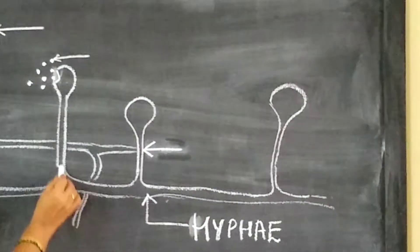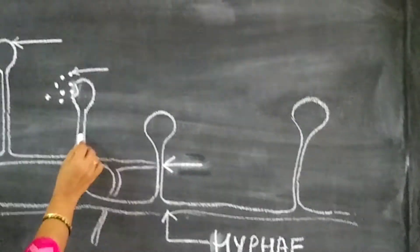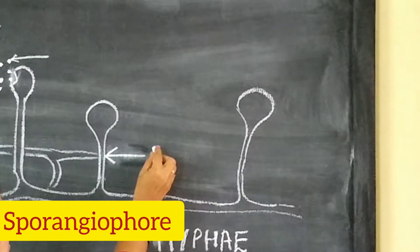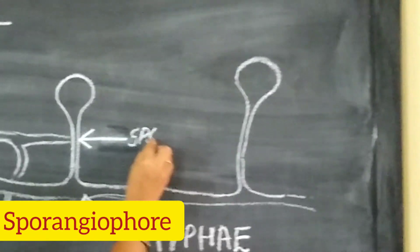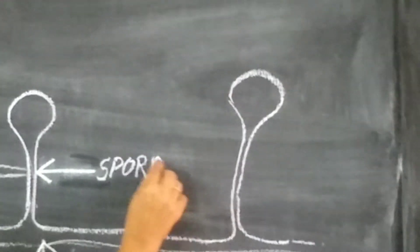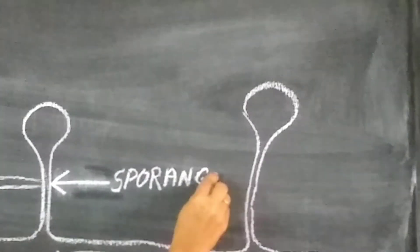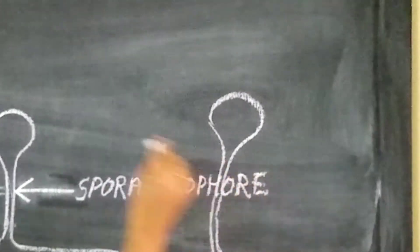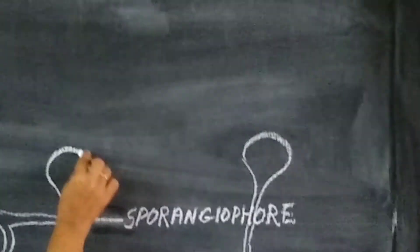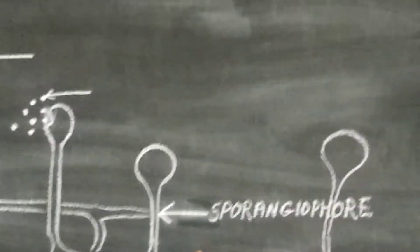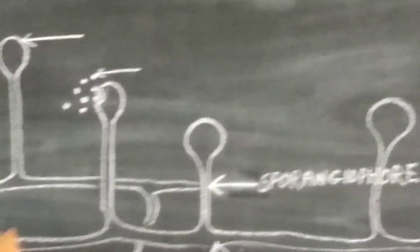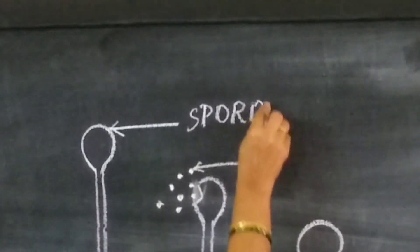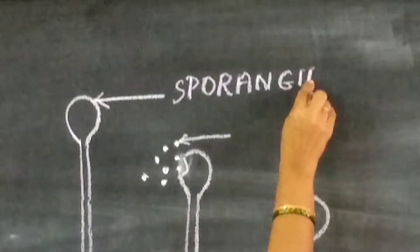The standing threads are known as sporangiophores. The bulb-like structures at the tip of the sporangiophores are known as sporangia.